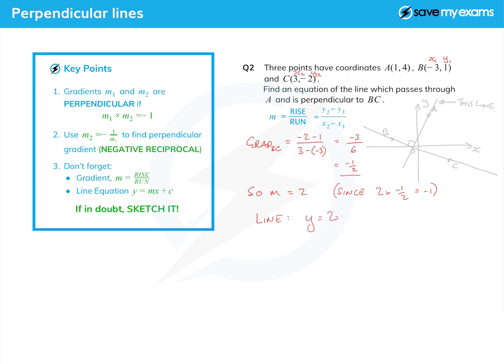How do we find the c? Well we use the point A, that's the point we're given. So we're going to use the point on the line which is (1, 4). That's going to give me 4 because that's the y value, equals 2 times 1 because that's the x value, plus c.